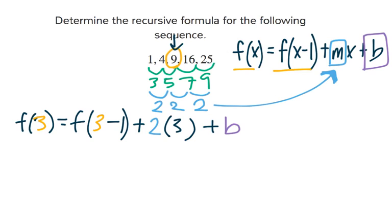Let's start plugging in numbers. So f(3) we know is 9, equals, and then we know that f(3-1), that's f(2). Well, f(2) is 4, so 9 equals 4 plus 2 times 3, which is 6, plus b.